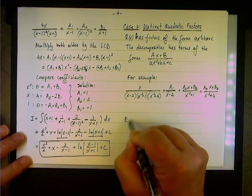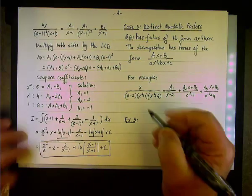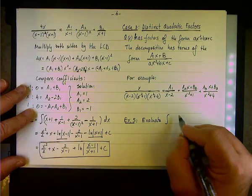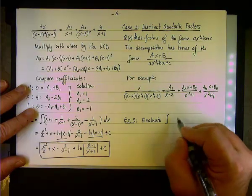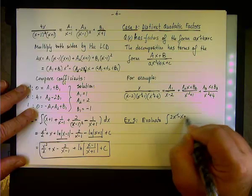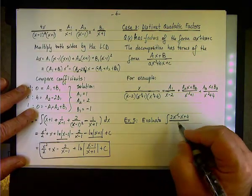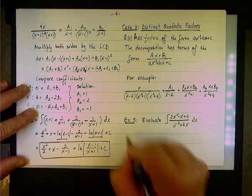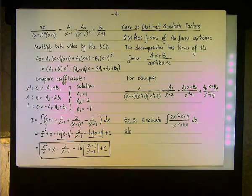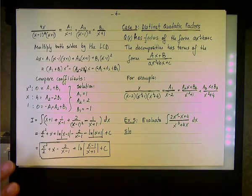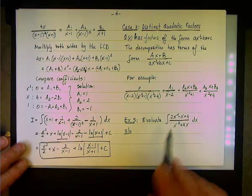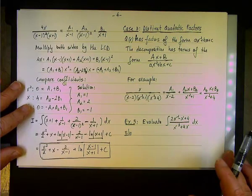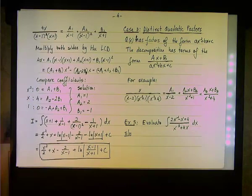Example 5: evaluate the integral where the numerator is 2x² − x + 4 and the denominator is x³ + 4x. This is a proper rational function. The degree of the numerator is 2 and the degree of the denominator is 3, so we don't have to do long division.